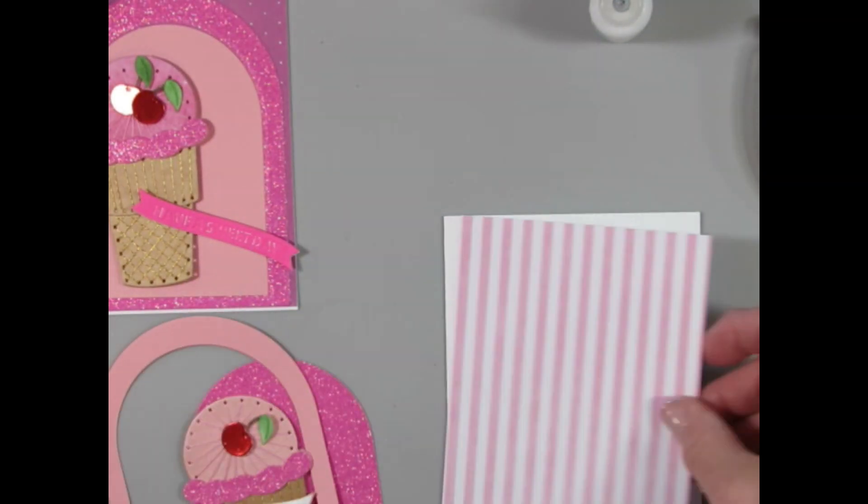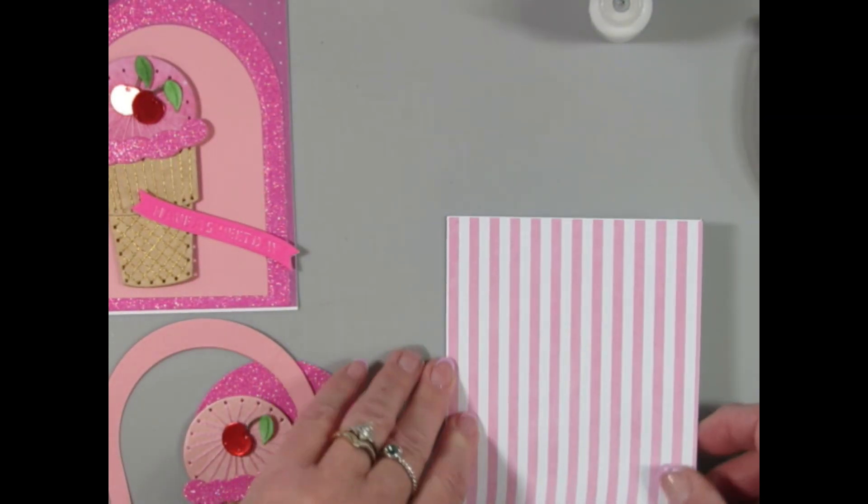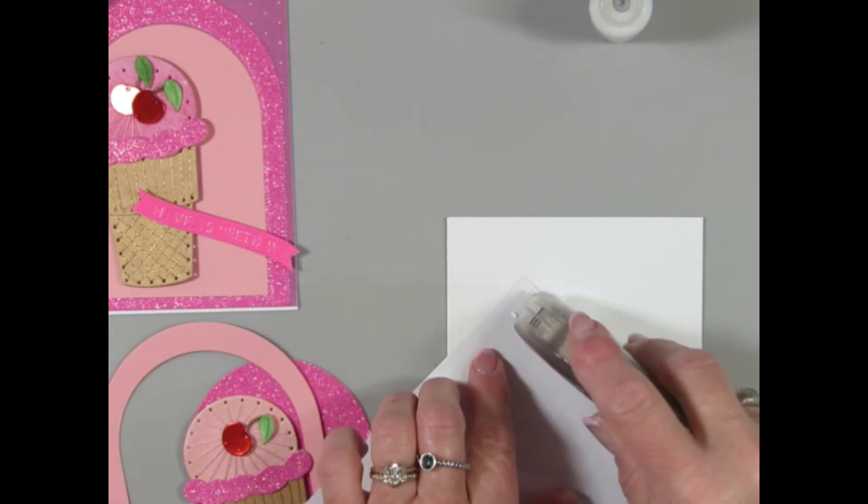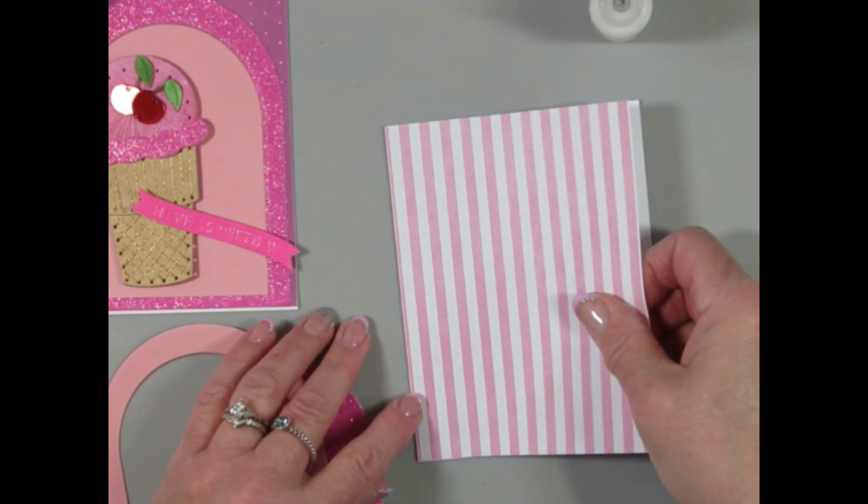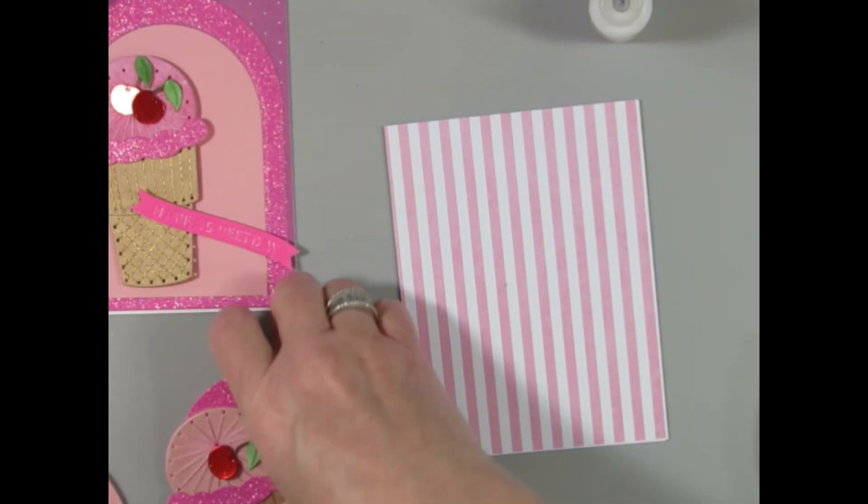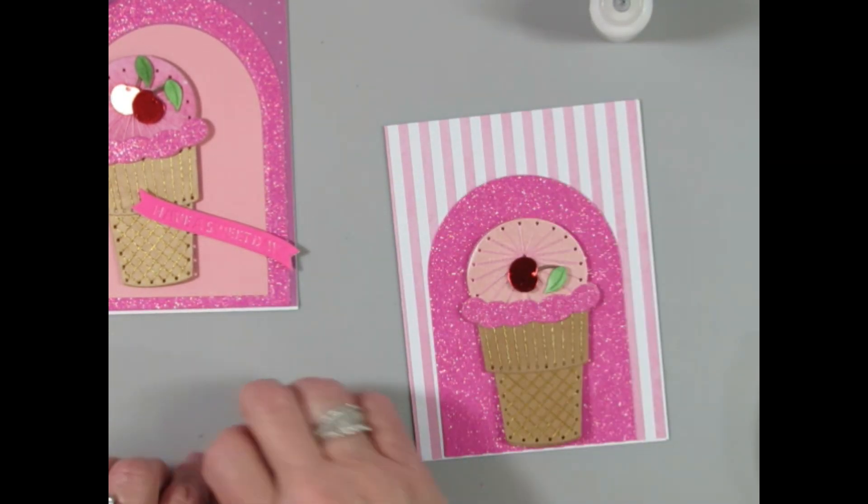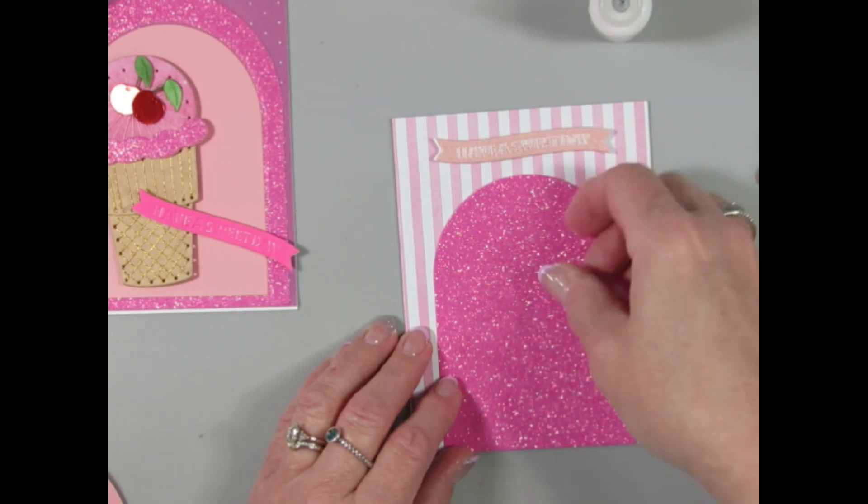And then I have some pink pearlescent paper. So that'll be card number one. And then for card number two, I had some Spellbinders paper from a long time ago that I'm using. It's a striped pink cardstock. And then I have the arch made out of the glitter paper.